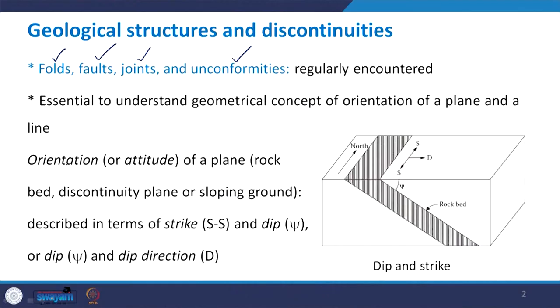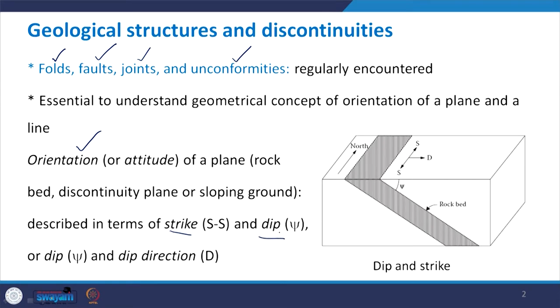Therefore, the orientation of a plane — and this orientation is also called as attitude — needs to be defined. Now this plane can be anything: this plane can be a rock bed, this plane can be a discontinuity plane, or it can be a sloping ground. So the orientation of any such plane in a 3-dimensional situation is described in terms of strike and dip, or dip and dip direction. Have a look at this figure and you can see that we have the north in this direction. This is the rock bed whose inclination we want to represent graphically.